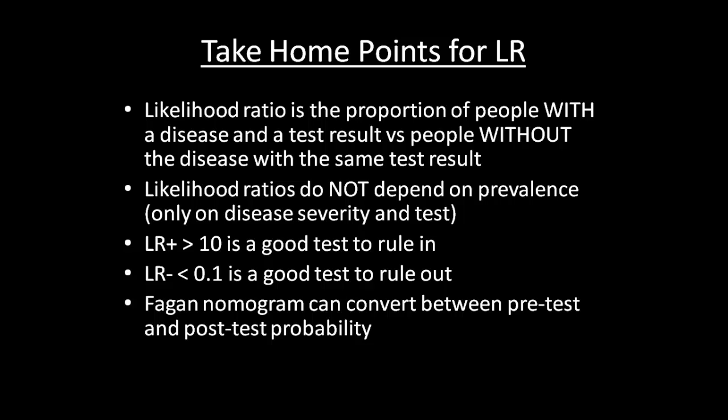Let's go over our take-home points for likelihood ratio. The definition of likelihood ratio is the proportion of people with a disease and a given test result versus the proportion of people without the disease and the same test result. Likelihood ratios are related to sensitivity and specificity and do not depend on prevalence, but they do depend on disease severity and the specific test. A likelihood ratio greater than 10 gives good information and helps rule in disease. A likelihood ratio less than 0.1 is a good test and helps rule out disease. Likelihood ratios are also the best way to calculate between pre-test and post-test probability, which can be done with a Fagan nomogram.